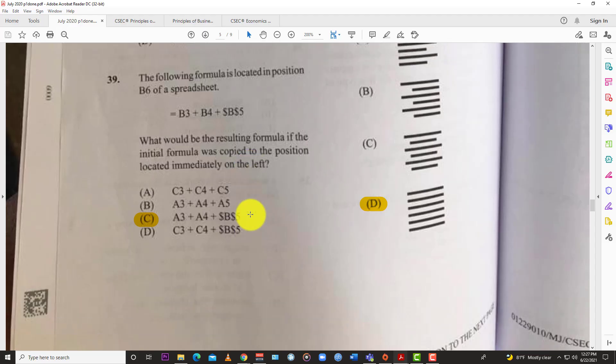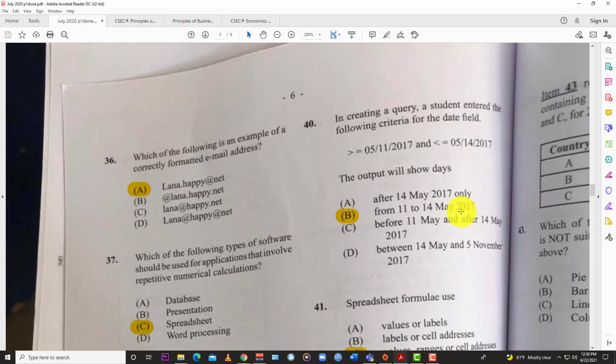Question 39: The following formula is located in position B6 of the spreadsheet: equals B3 plus B4 plus dollar sign B dollar sign 5. What would be the resulting formula if the initial formula was copied to the position located immediately to the left? The immediate left would be of course column A. So the answer is C: equals A3 plus A4 plus dollar sign B dollar sign 5.